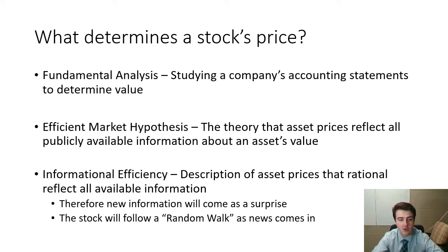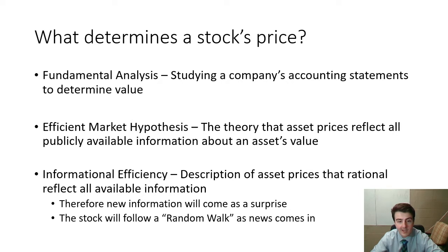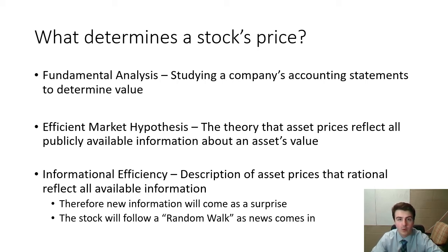The stock prices show informational efficiency. If this is true, then any change in a stock price is following some kind of news, some kind of shock. And the nature of news is nobody sees it coming — it's unexpected. So as the stock follows this bouncing up and down according to news about the company or the market, it's going to follow a random walk. This is a statistical term — all it's saying is that the path of this variable is impossible to predict because the news is what's going to drive it up and down.